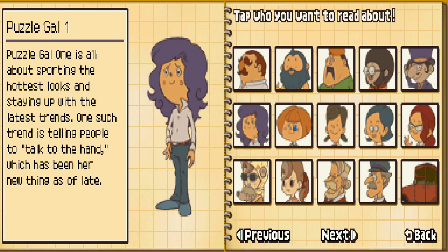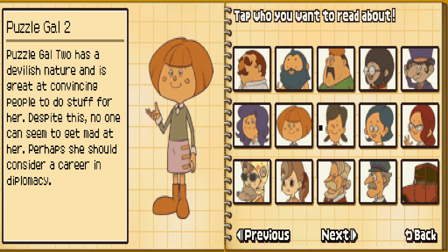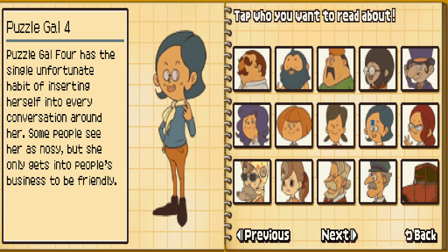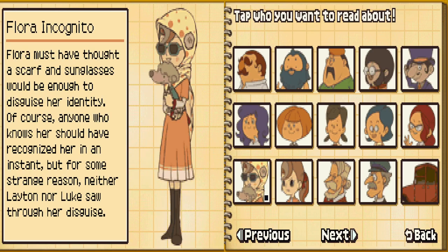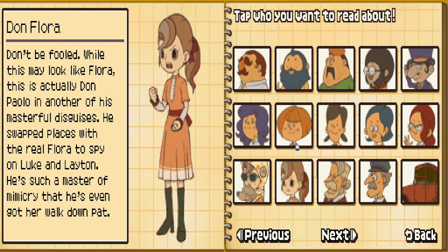And we got the Puzzle Gals. We have Flora Incognito — pretty cool. Anyone who knows her should have recognized her in an instant, but for some reason neither Layton nor Luke saw through her disguise. We got Don Flora. This may look like Flora but is actually Don Paolo — he's even got her walk down. Weirdo.